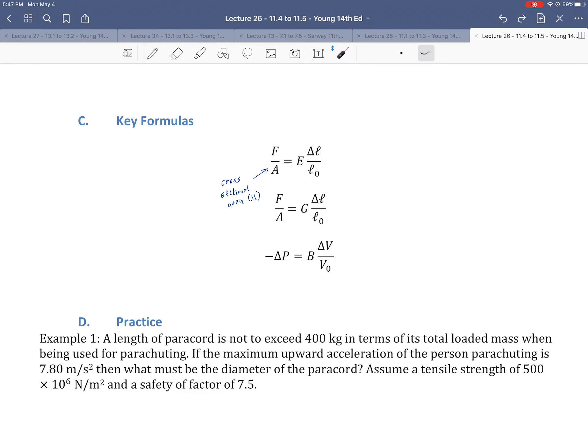Let's flip to the next page and take a look at our key formulas. The first key formula is the formula for the Young modulus. Over here is F over A. This is force per area. And this would be the cross-sectional area that is parallel because we're talking about tension or compression, because that's where we use the Young modulus.